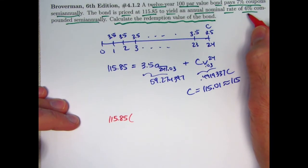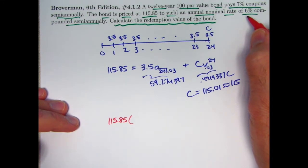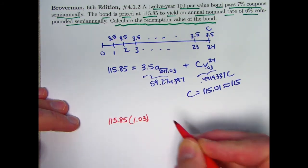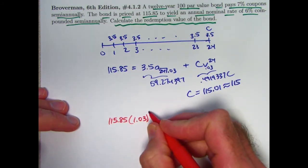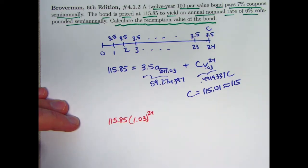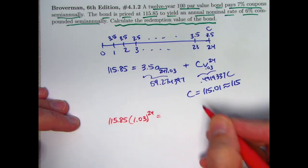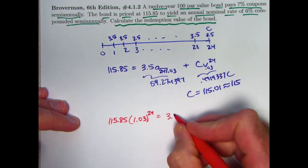Take 115.85 times 1.03 to the 24th power, 12 times 2. That should be the future value of the 3.5s.